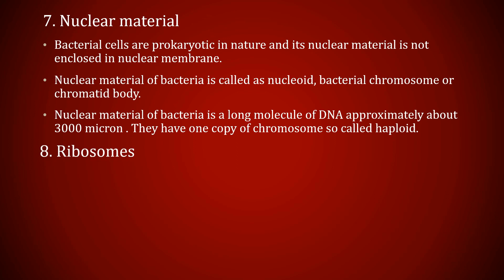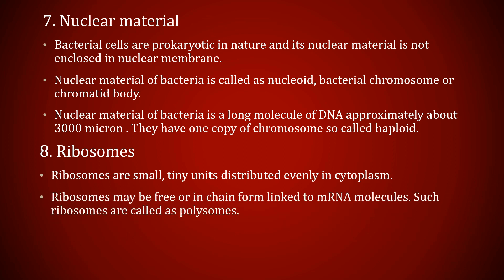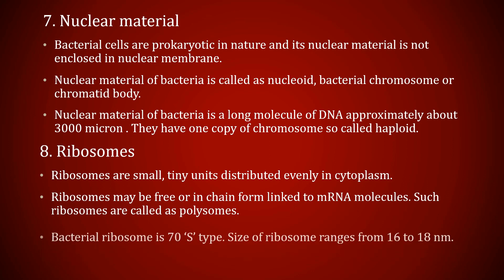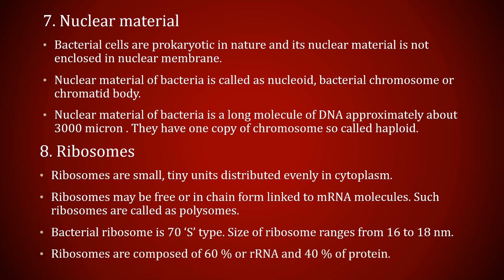The eighth is ribosomes. Ribosomes are small, tiny units distributed evenly in the cytoplasm. Ribosomes may be free or in chain form linked to mRNA molecules; such ribosomes are called polysomes. The bacterial ribosome is 70S type and the size ranges from 16 to 18 nanometers. Ribosomes are made up of 60% RNA and 40% protein.